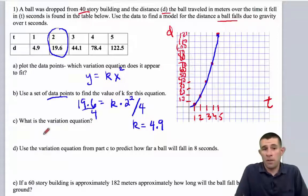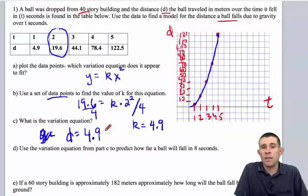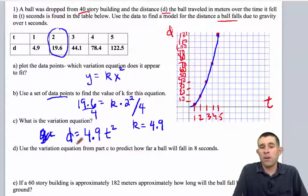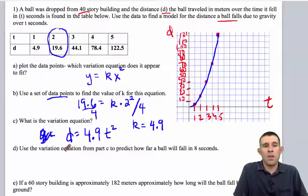So let's write our variation equation. It states that d is equal to 4.9 times t squared. So the distance a ball falls due to gravity is 4.9 times the time in seconds it falls squared.